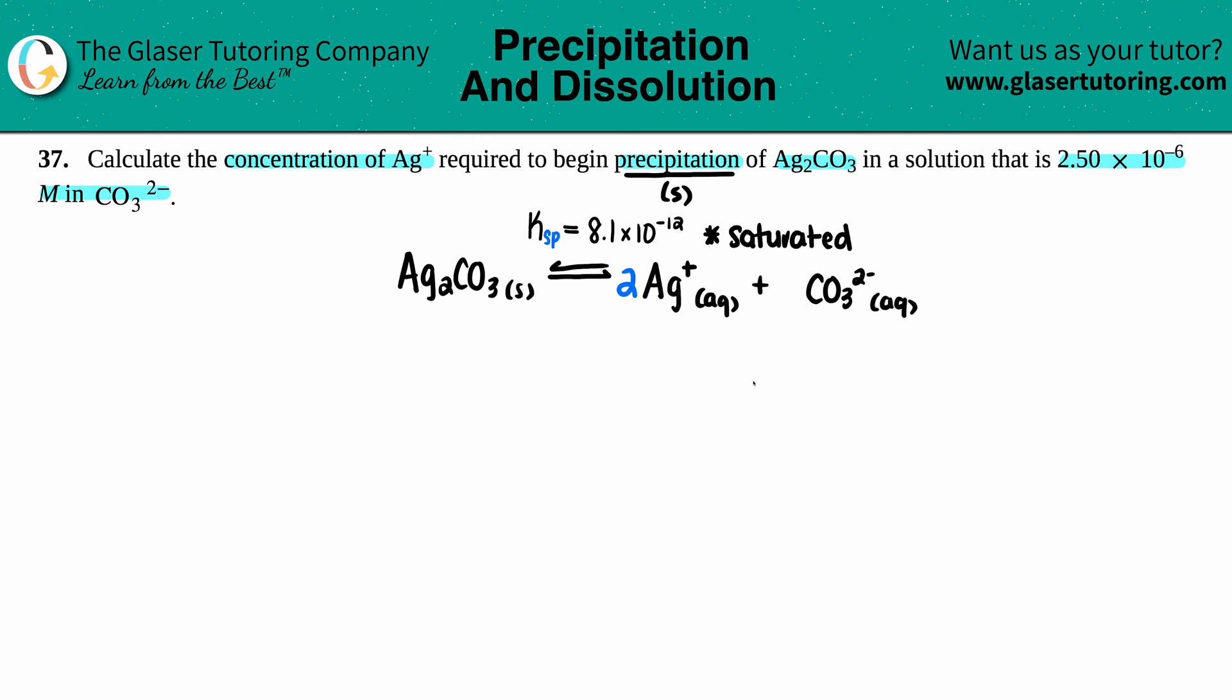I'm going to put the values that they gave us. For the carbonate ion, we had 2.50×10⁻⁶ molarity. We want to solve for the concentration of the silver, so I don't know what the concentration of the silver is, so I'm going to label it as x.